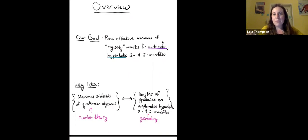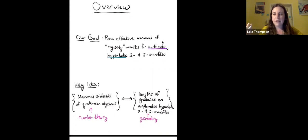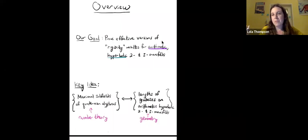We want to ultimately prove effective versions of what are called rigidity results for arithmetic hyperbolic two and three manifolds. By rigidity, I mean we want to understand how much two manifolds need to have in common in order to be considered the same — equivalent under some notion of equivalence. I'll define carefully what I mean by arithmetic and hyperbolic two and three manifolds later on, because this is a number theory audience and these might not be objects you've encountered.